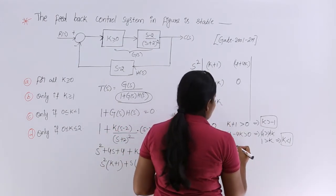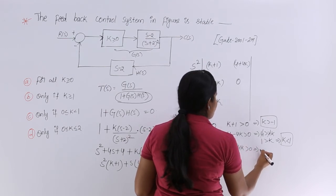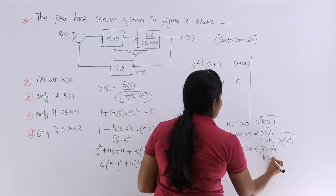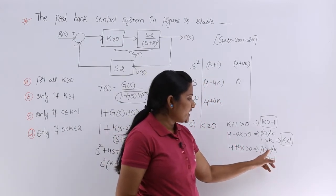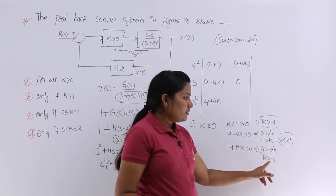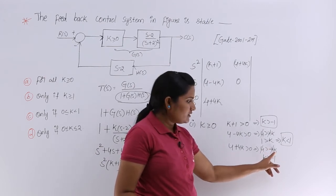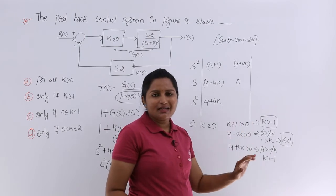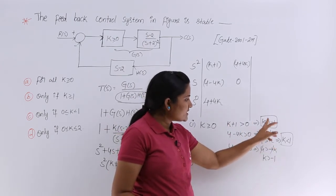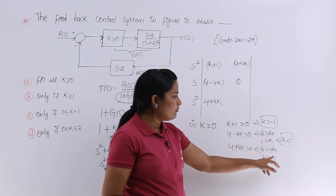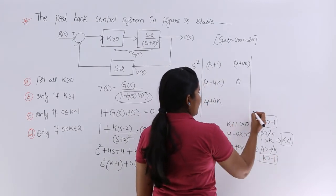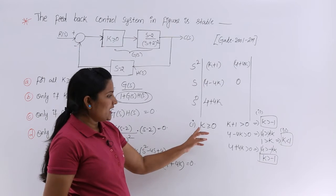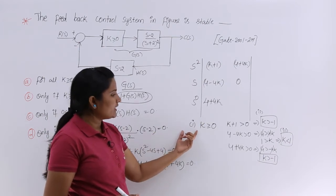From the last element: 4 + 4k > 0, giving k > −1 — the same condition as before. So we have three conditions: k > −1, k < 1, and k ≥ 0. Combining these, k must satisfy 0 ≤ k < 1.